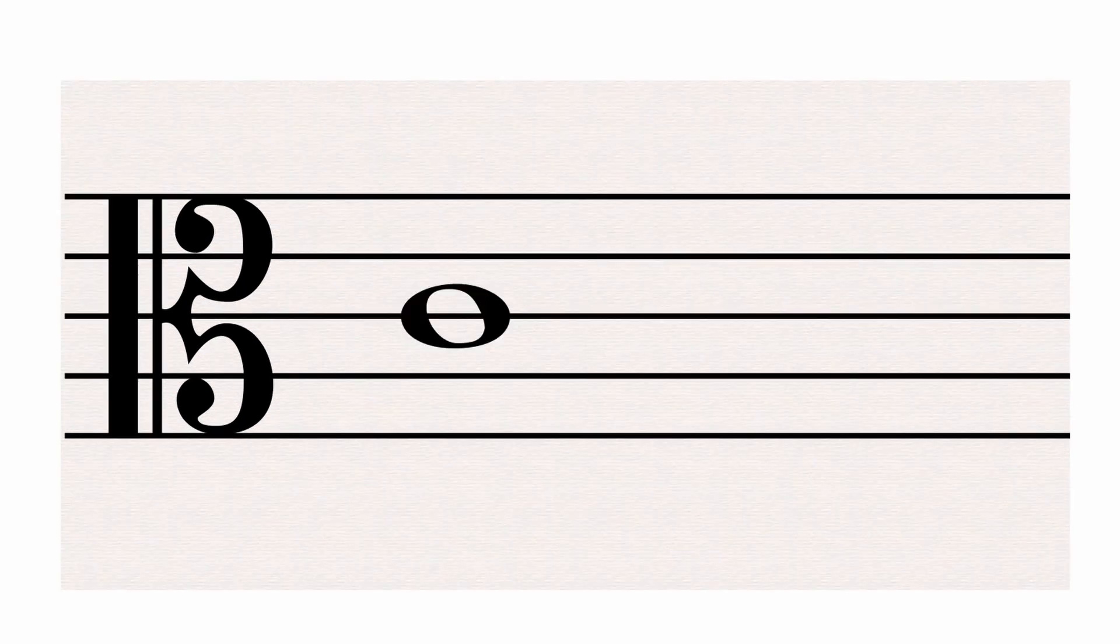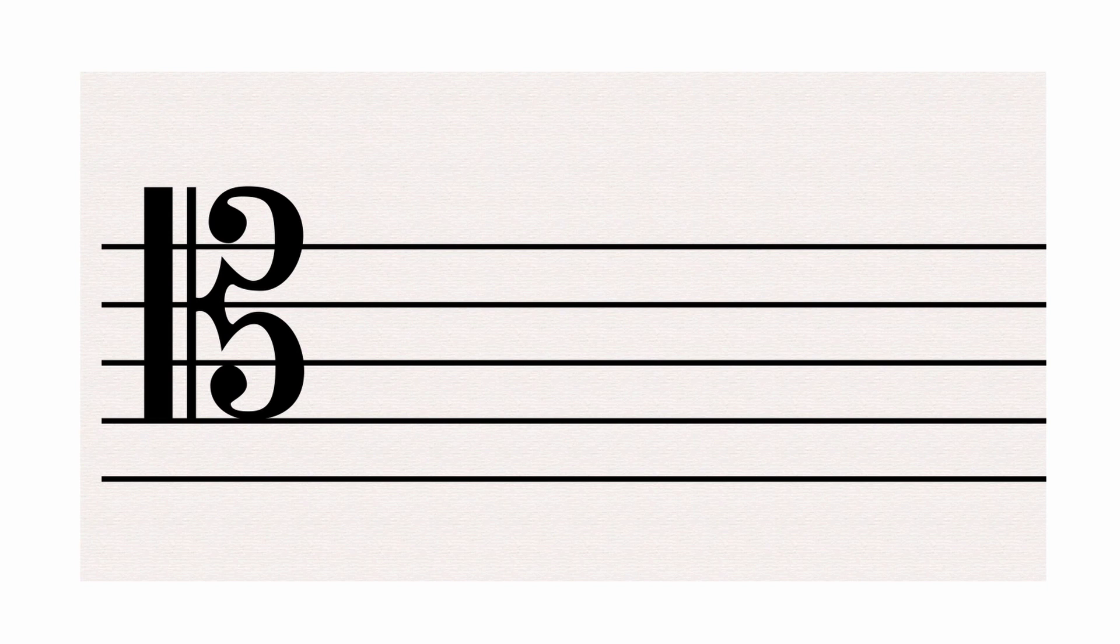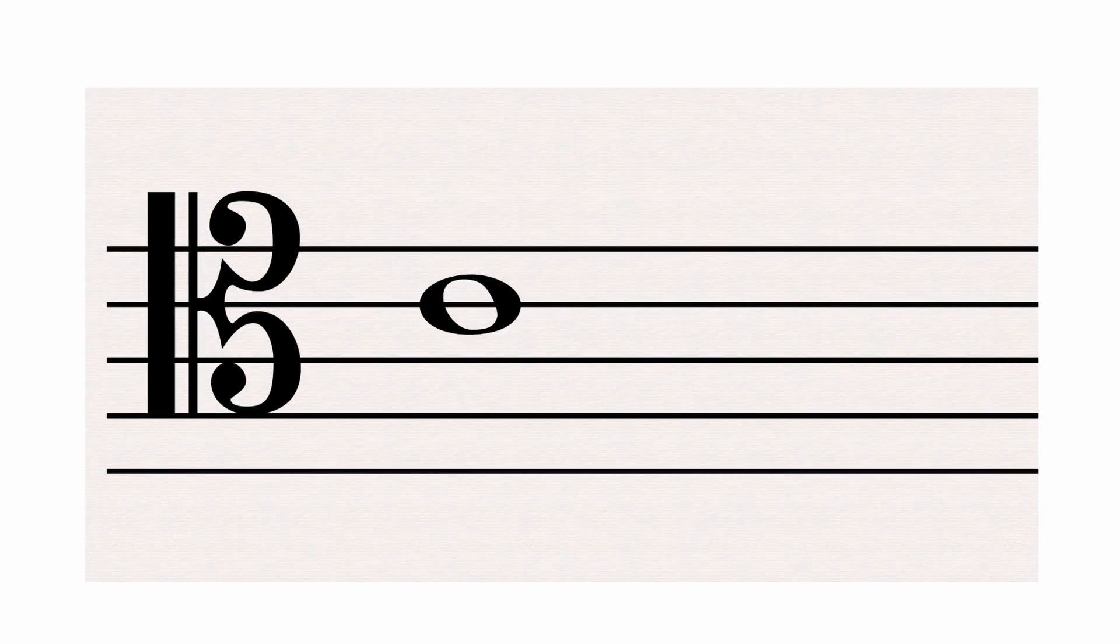Here's the alto clef. Notice how it seems to sandwich the third line? Well, that's because that's where middle C is when reading this clef. Here's the tenor clef. It's identical to the alto clef, but it sandwiches the fourth line instead, so that's where middle C is with the tenor clef.